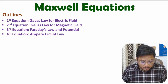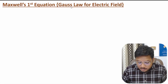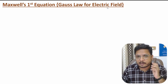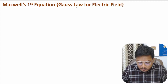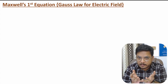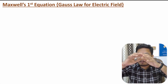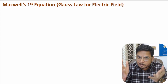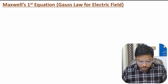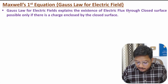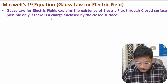Let us see Maxwell's first equation, which is based on Gauss's law for electric field. Gauss's law for electric field explains the amount of flux passing through a closed surface. The amount of flux passing through a closed surface is based on the charge within that closed surface. So Gauss's law explains the existence of electric flux passing through a closed surface, which is possible only if there is charge within it.